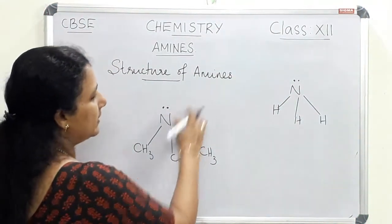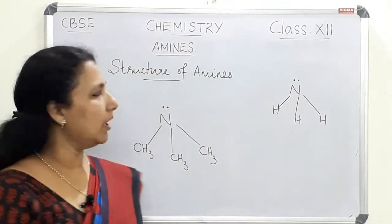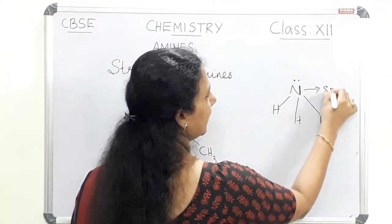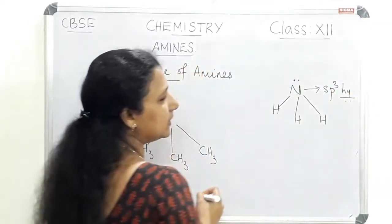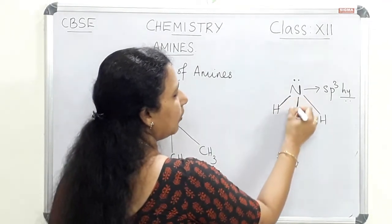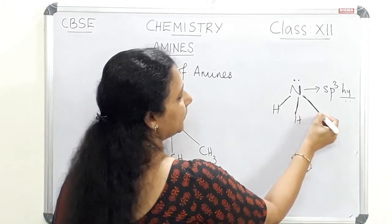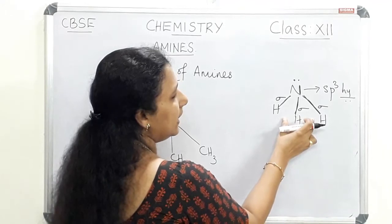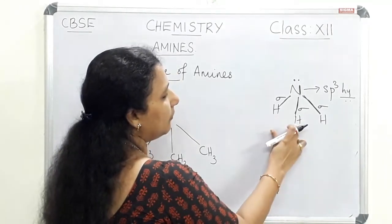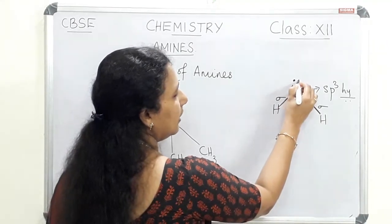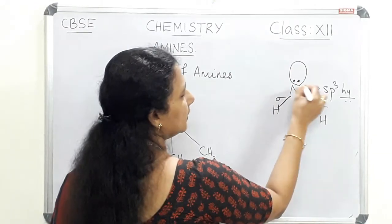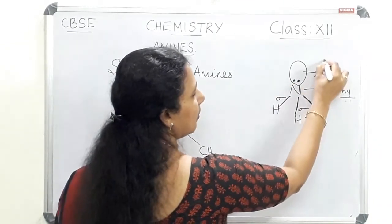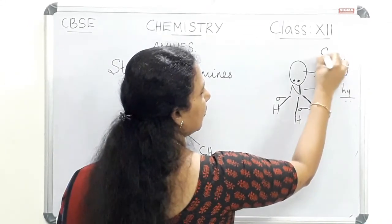Let us see the structure of amines. We know that amines are derivatives of ammonia, so ammonia is NH3. In ammonia, the nitrogen atom is sp3 hybridized. Out of four sp3 hybrid orbitals, three hybrid orbitals overlap with the s orbital of hydrogen atoms to form sigma bonds, and there is one lone pair of electrons in the fourth sp3 hybrid orbital. This lone pair of electrons causes the basicity of ammonia.